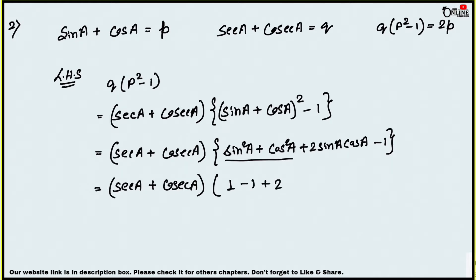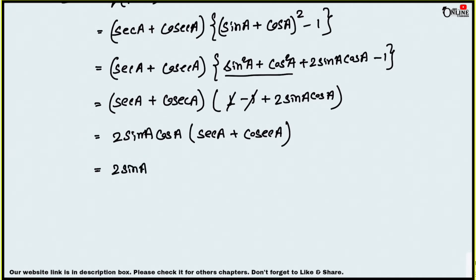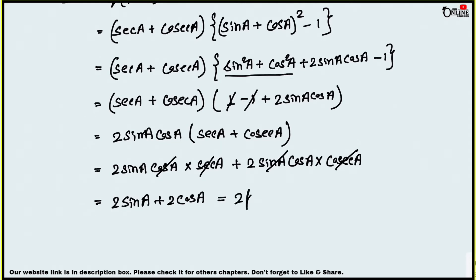Since sin²a + cos²a = 1, the 1 and -1 cancel out, leaving 2 sin a cos a multiplied by (sec a + cosec a). Expanding: 2 sin a cos a · sec a + 2 sin a cos a · cosec a. Since sec is the reciprocal of cos and cosec is the reciprocal of sin, this simplifies to 2 sin a + 2 cos a.